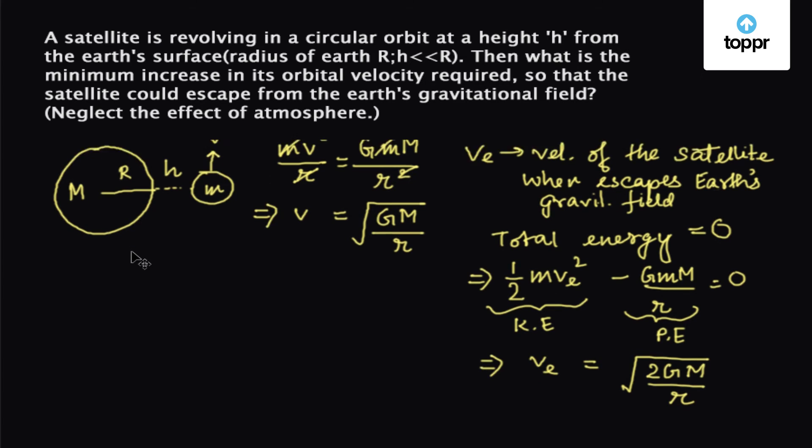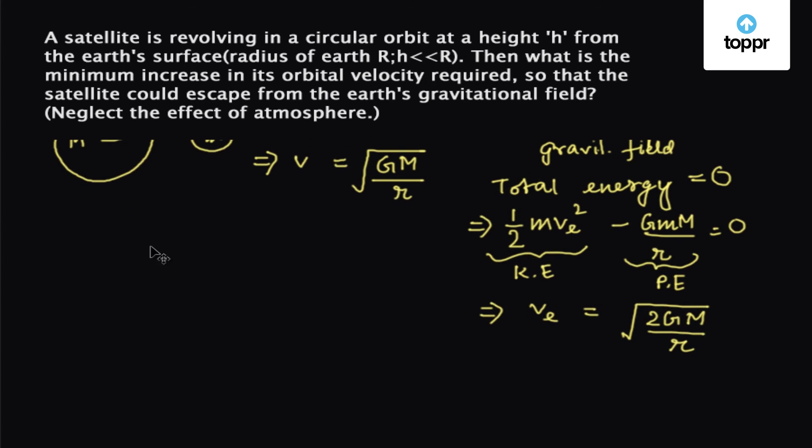So the increase in velocity would be ve minus v which is equal to root over 2GM upon r minus root over GM upon r.